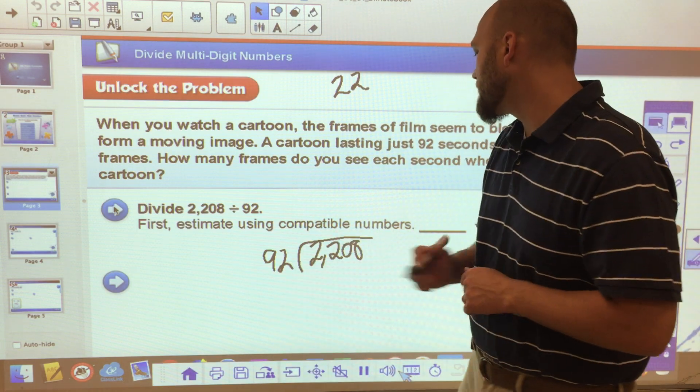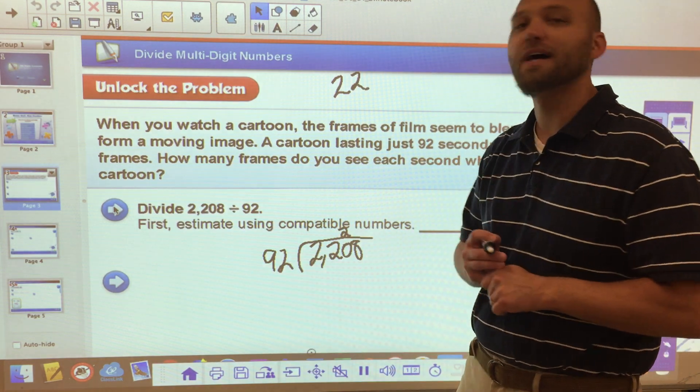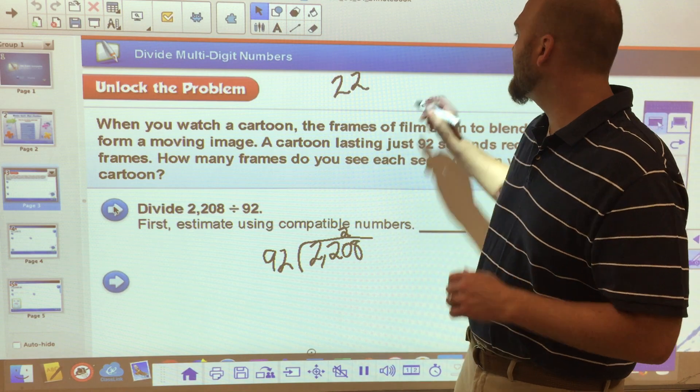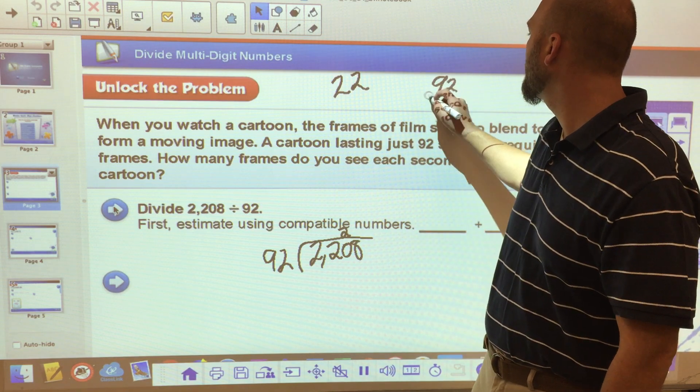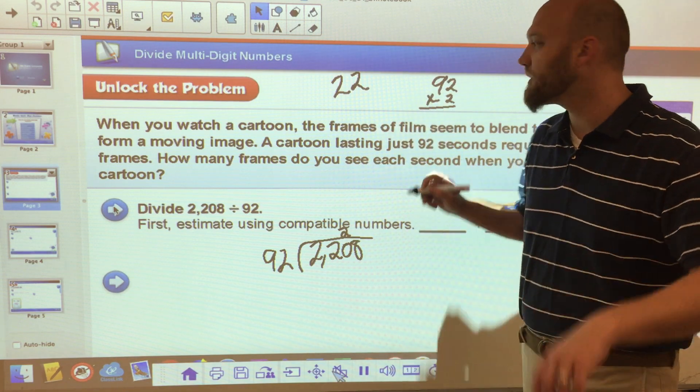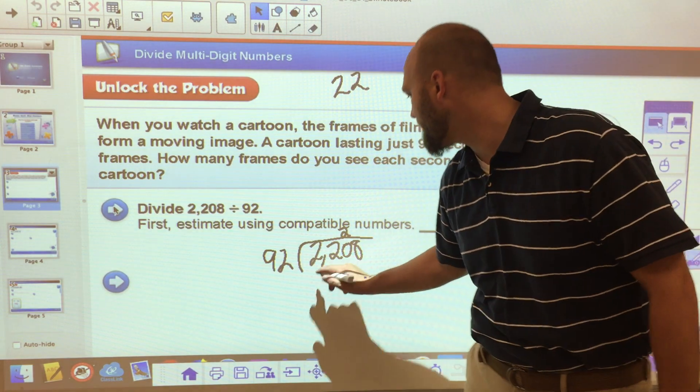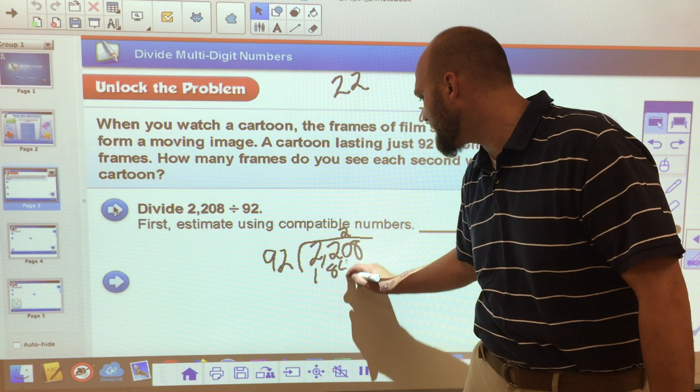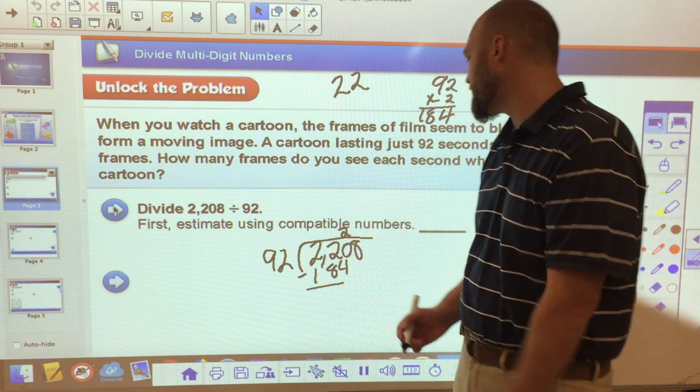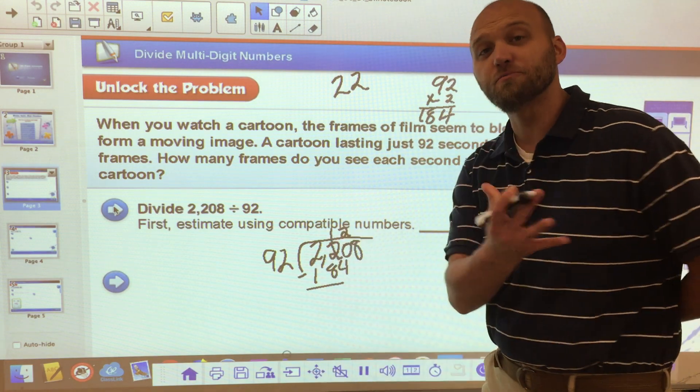So 92 goes into 220 two times. And what I end up with is 92 times 2. Just to check my work here a little bit, I get 4 and 18, 184. I put 184 down here. And this should be review for most of you. We're going to go through it anyway. And I subtract.